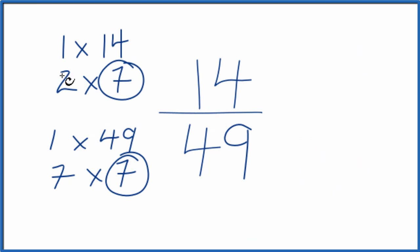So 14 divided by 7 is 2, and then 49 divided by 7 is 7. So we end up reducing or simplifying the fraction 14/49 down to 2/7, and we can't simplify this any further.